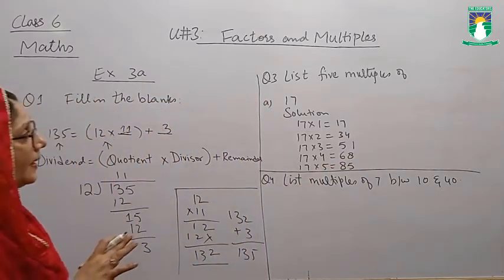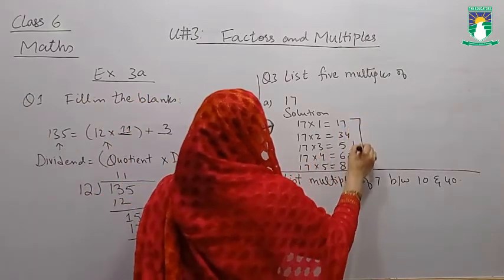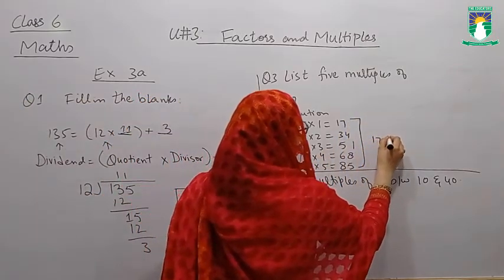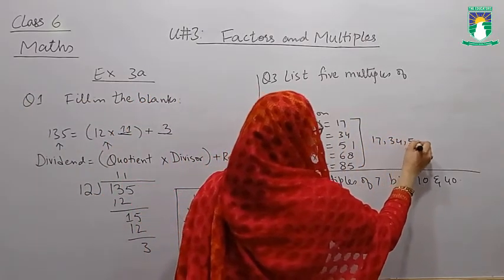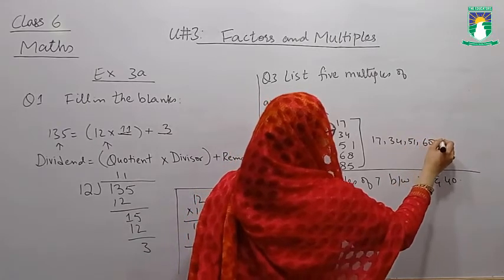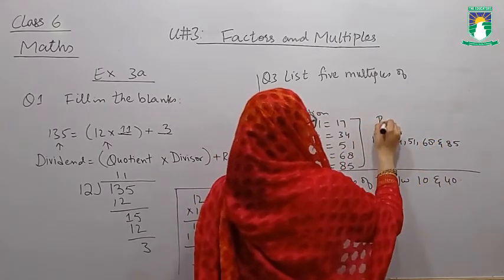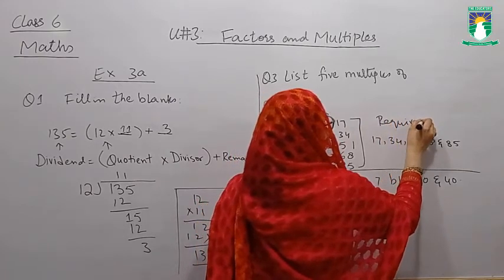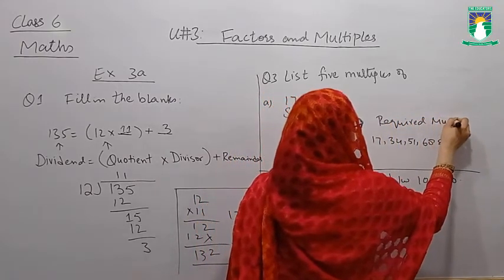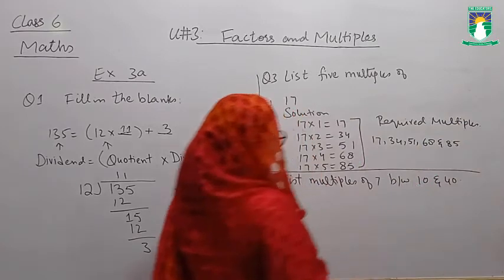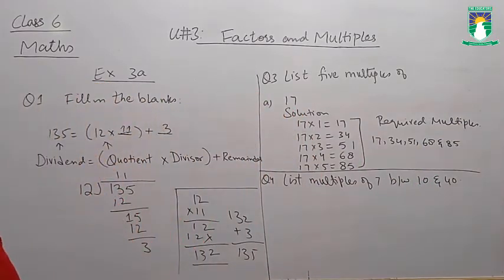So the required multiples of 17 are: 17, 34, 51, 68, and 85. These are the required multiples we have here.